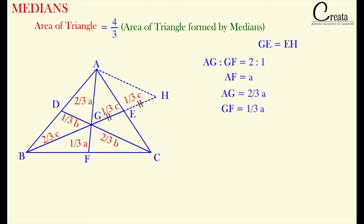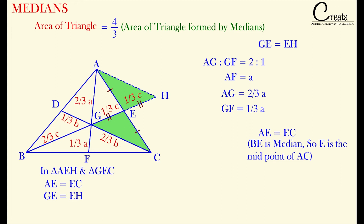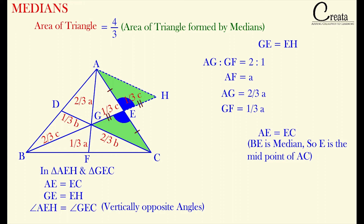Further, AE is equal to EC. Why? Because BE is a median and a median joins the vertex to the midpoint of the opposite side, so E is the midpoint. So we can say AE is equal to EC. If we take triangle AEH and triangle GEC, we have seen AE is equal to EC and GE is equal to EH — both equal to 1 by 3 C. Further, both of these angles are vertically opposite angles, so angle AEH is equal to angle GEC. So by SAS rule, we can say both triangles are congruent to each other.